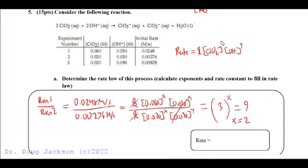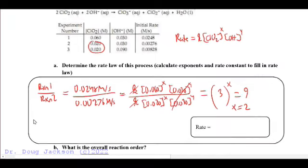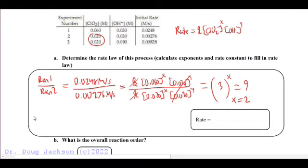If we then say, well, we know our X now, let's get our Y by dividing something that holds this constant here. And so we're going to divide reaction two and three.